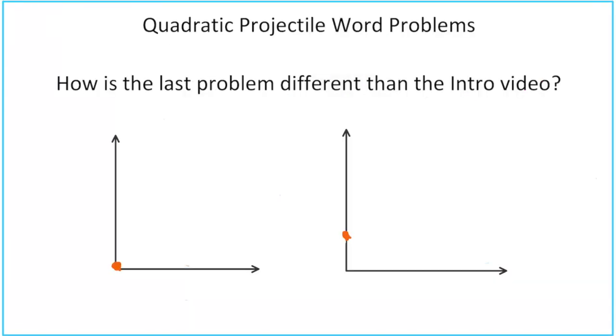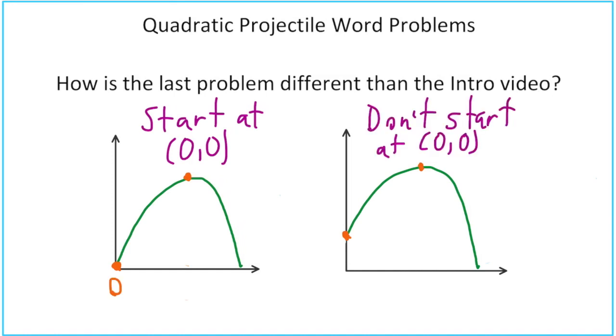Let's take a look at how the last problem is different than the problems that we did in the intro video. In the intro videos, our parabolas always look something like this. Whereas in the last video, the parabola was something like that. So what's the difference going on there? In the intro videos, we always started at zero, zero. But in our last video, we don't start at zero, zero. And that leads to some changes in the way we go about solving it. So let's pretend that the x value of the vertex is eight. And we'll do that for both parabolas. In the intro video, if we wanted to find out when the rocket or the ball hit the ground, we could just take our eight and double it. And when we went eight times two, we got an x-intercept of 16.